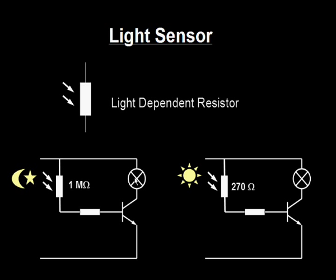In light conditions, resistance is low. Current flows into the base of the transistor, and therefore your bulb will be switched on.